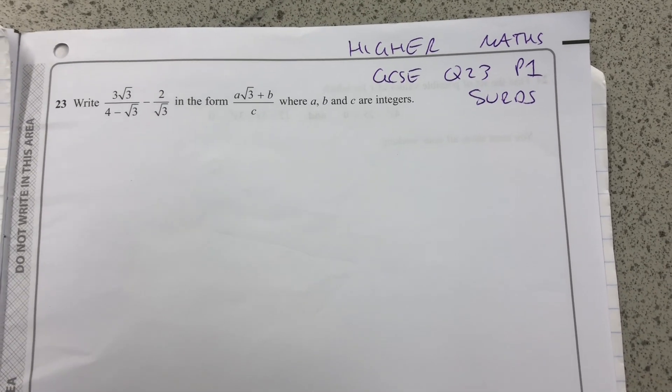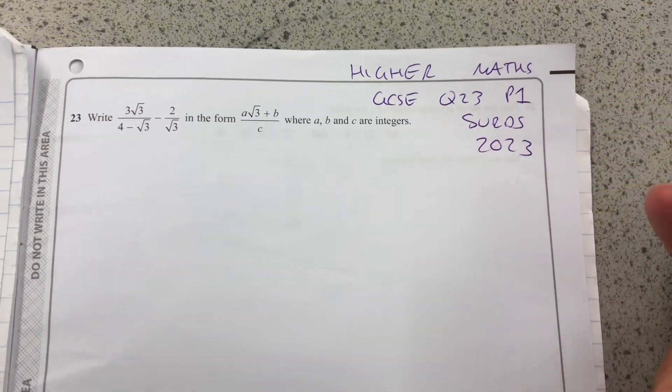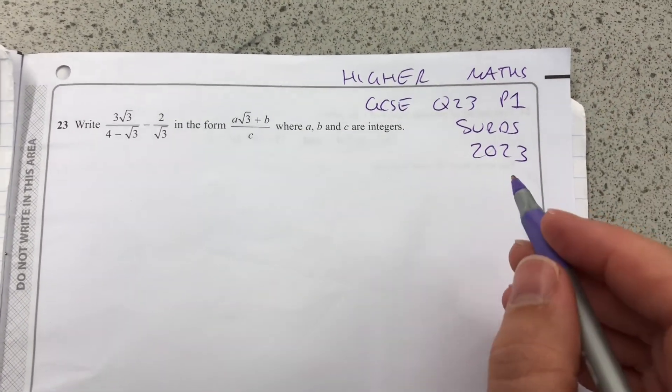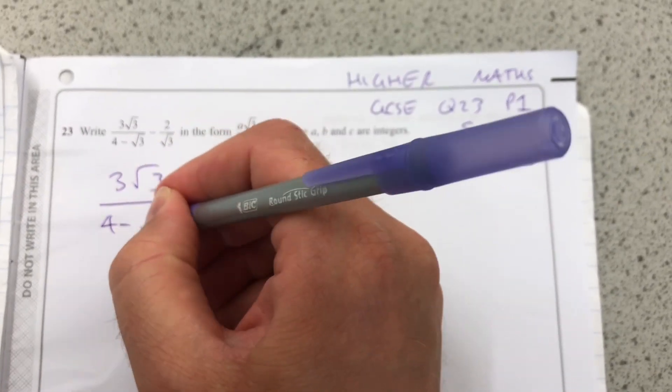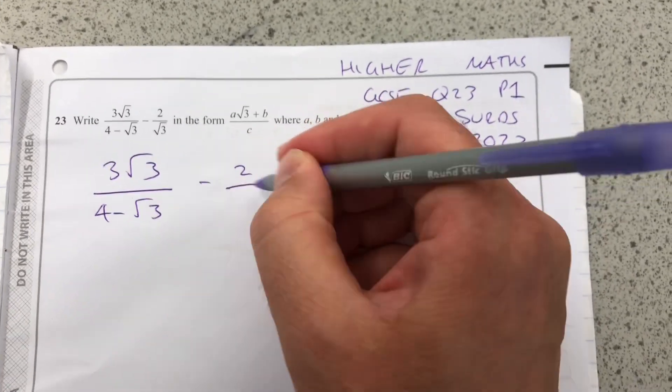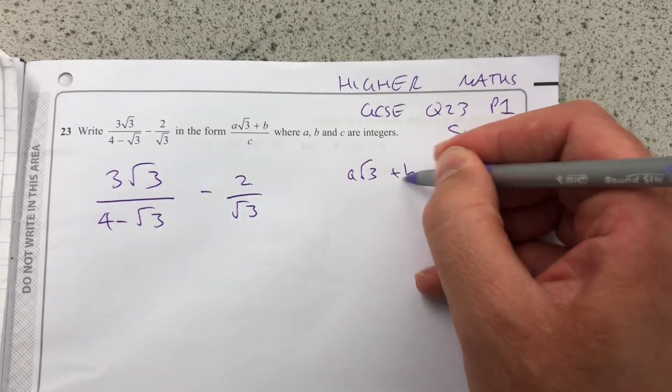Hello and welcome to Martin Maths. We're doing the Higher Maths GCC Papers of 2023. And this is question 23 about surds. So we have 3 root 3 over 4 minus root 3 minus 2 over root 3. And we have to put it into the form A root 3 plus B over C.